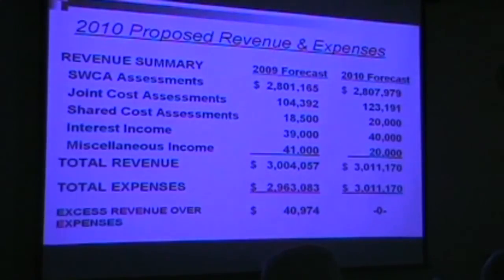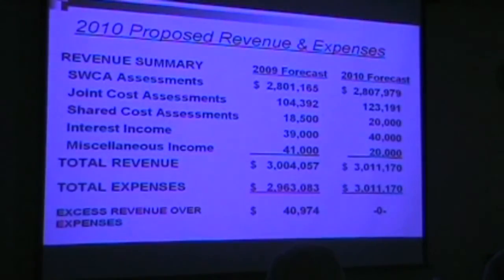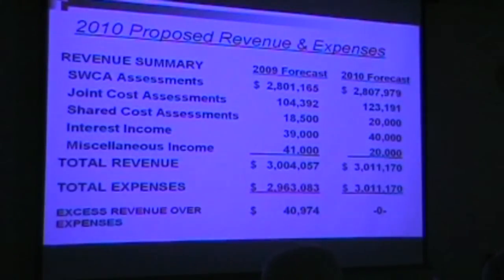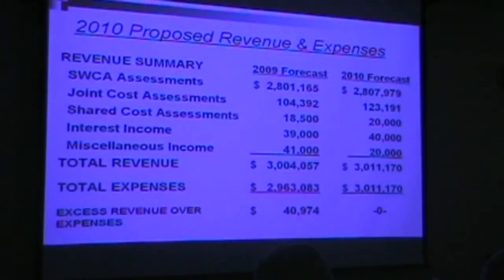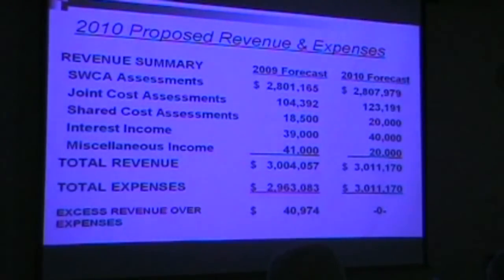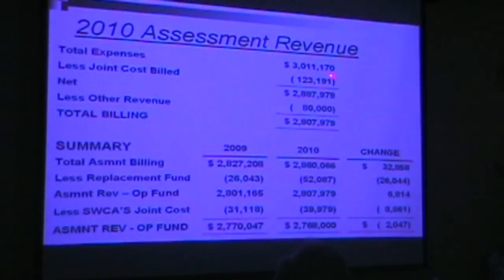We're instituting an ACH debit program similar to how you pay your utility bills with FPL or anyone else — you designate the date and it'll automatically come out of your checking account. We think that'll help slow down late fee calculations and interest charges. We also discussed how we're going to handle chargebacks to communities. In the past, the association would pay for it all and then get reimbursed by residents. Going forward, it'll be an in-and-out on a receivable basis — it won't hit the income statement — and that's why this line dropped by $20,000.